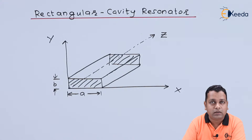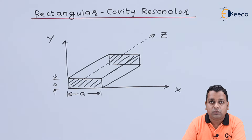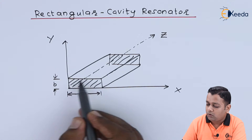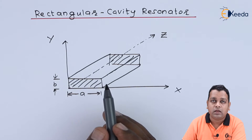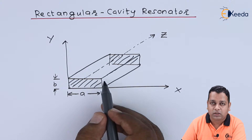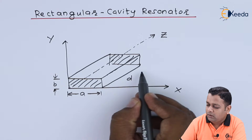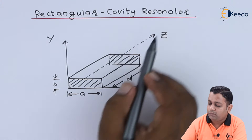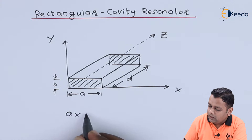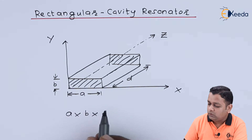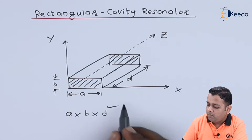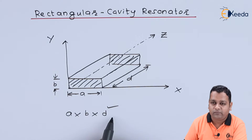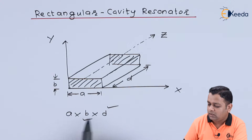While analyzing the rectangular waveguide, we derived field equations using Maxwell's equations, assuming infinite length. Now, since both ends are closed, the third dimension — the length along the z direction — must be taken into consideration. We denote the length of the resonator along z by the symbol small d. The rectangular cavity resonator is therefore designated by dimensions a × b × d, where d is typically the maximum and b is the minimum among the three.